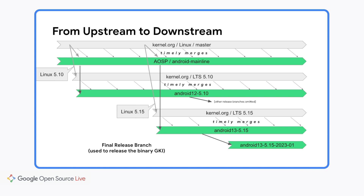This slide gives a simplified overview of how code flows in AOSP from upstream to release branches downstream. The starting point is the upstream Linux kernel master tree, also referred to as mainline Linux. Every release candidate and release gets merged into Android mainline, usually within days. Android mainline can run on devices like the Pixel 6 for development purposes, and we try to keep it that way. Whenever there is a yearly LTS release, usually the last one in the year, we also create corresponding Android version development branches.